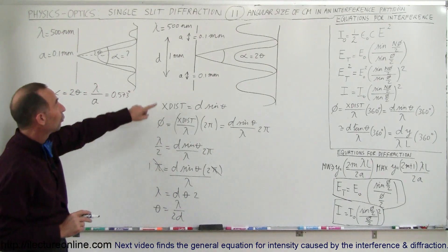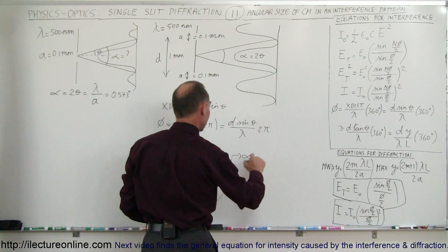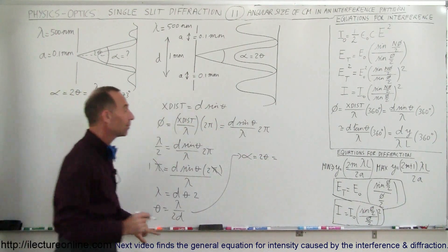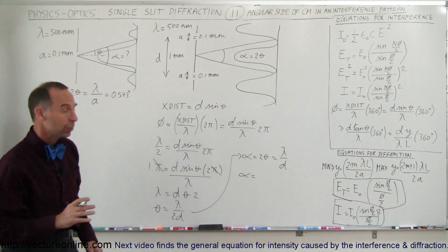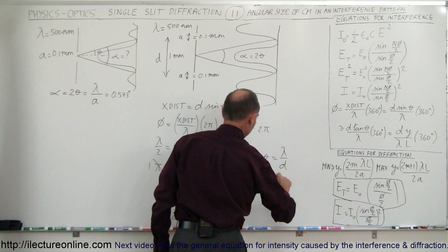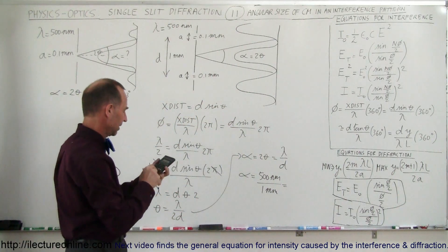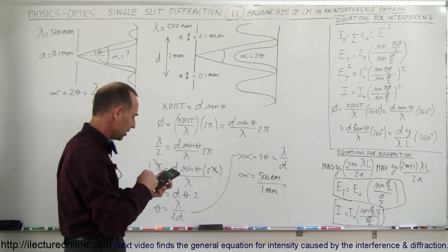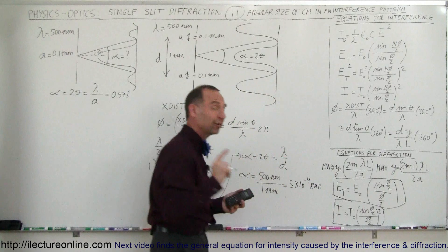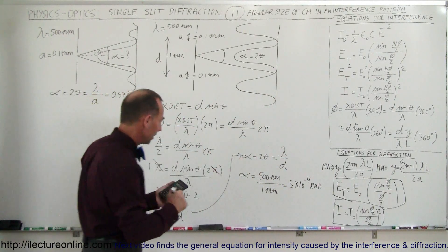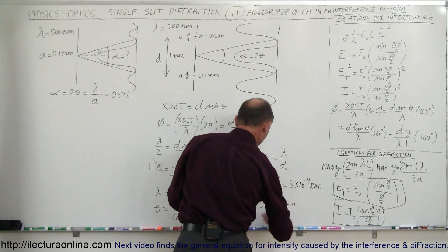The total angular width of the central maximum is 2 theta, which we call alpha. So alpha equals 2 theta equals lambda divided by d. Plugging in the values: alpha equals 500 nanometers divided by 1 millimeter, which is 500×10⁻⁹ divided by 0.001, giving 5×10⁻⁴ radians. Converting to degrees by multiplying by 57.3, we get alpha equals 0.02865 degrees.